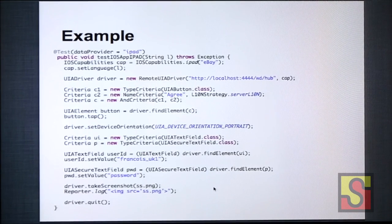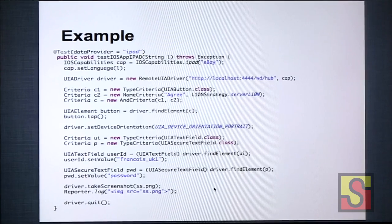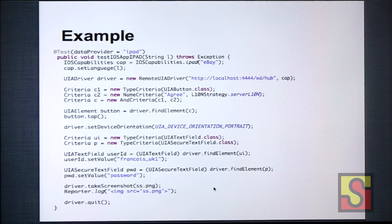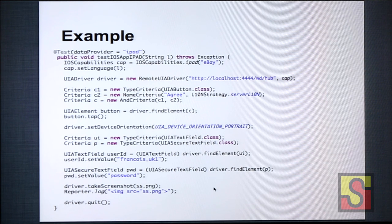That's the complete code example for what I just showed. Again, it uses TestNG and Eclipse for running tests — no need for a specific IDE. You specify the capabilities you want; if you've used Selenium this will be very familiar. You start the connection to the remote server and the simulator. The biggest difference from Selenium is that instead of using 'By' to select elements, we have a 'criteria' concept that you can combine to pick exactly what you want. I select my button, click it, enter the user ID and password, and take a screenshot at the end.